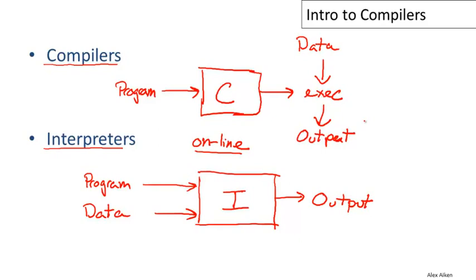And so in this structure, the compiler is offline, meaning that we preprocess the program first. The compiler is essentially a preprocessing step that produces the executable. And then we can run that same executable on many different inputs, on many different data sets, without having to recompile or do any other processing of the program.